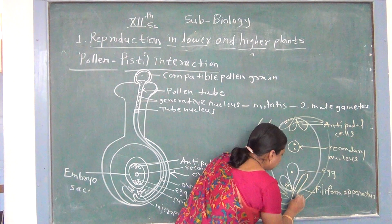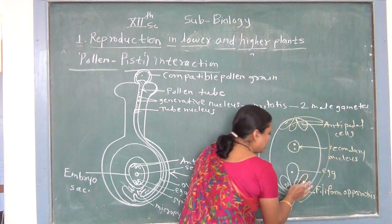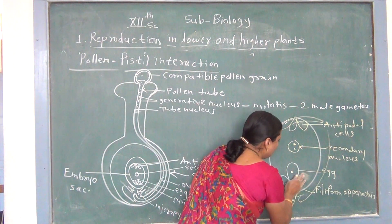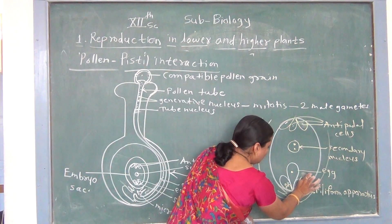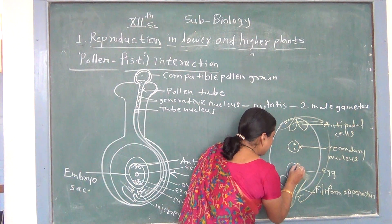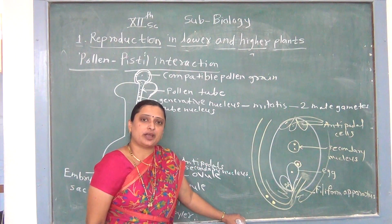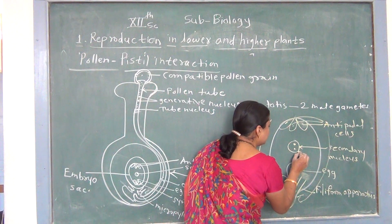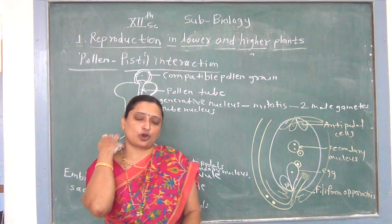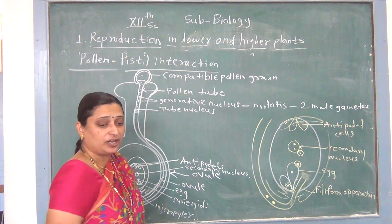The synergid contains water, which is absorbed by the pollen tube. Therefore, water content inside the pollen tube tip increases and the tip of the pollen tube bursts. At the same time, the tube nucleus degenerates, and the pollen tube releases the two male gametes into the embryo sac. The first male gamete fuses with the egg to form a diploid zygote. The second male gamete fuses with the secondary nucleus to form the primary diploid endosperm tissue.